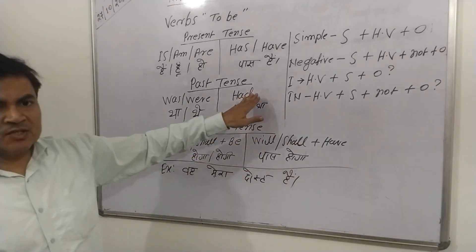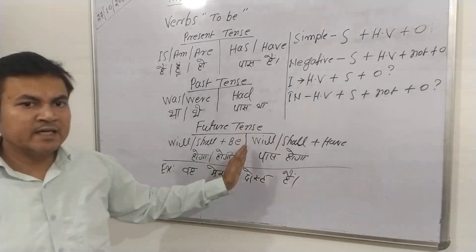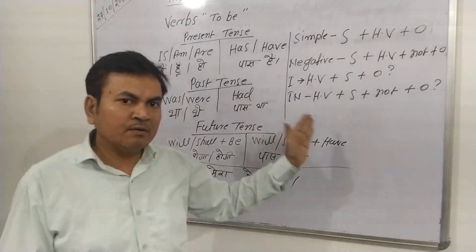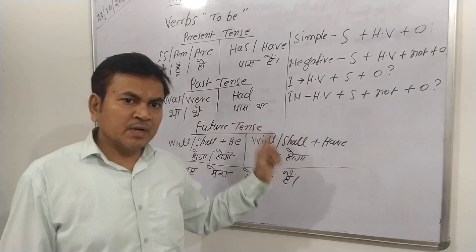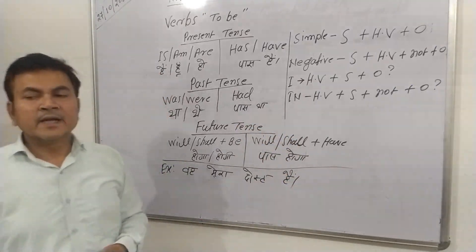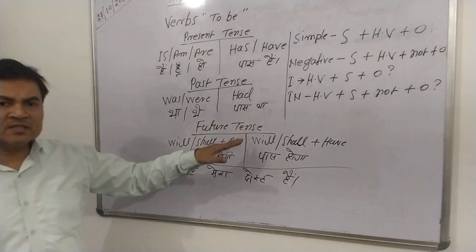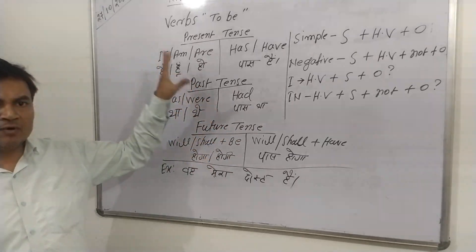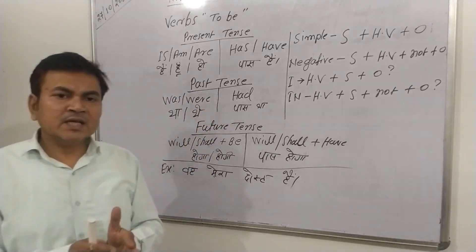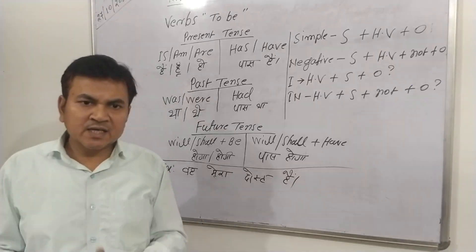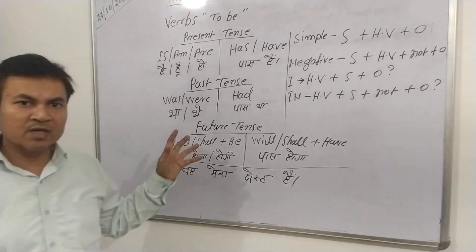Again in past tense you can apply the same formula. And in future tense the sentences will be: 'I shall have a house', 'I shall not have a house', 'shall I have a house?', and 'shall I not have a house?' So in this way we have come to know the importance of verb to be and how to use verb to be for those types of sentences in which there is no movement, there is no action. That's all about verb to be — thank you guys.